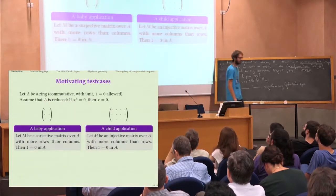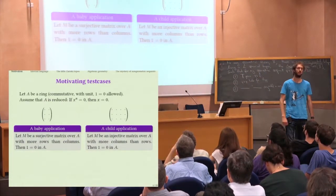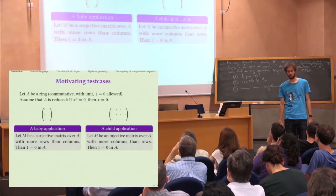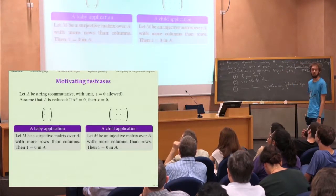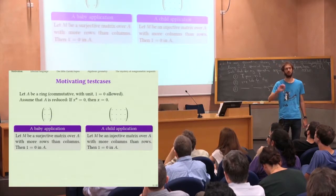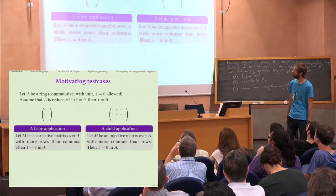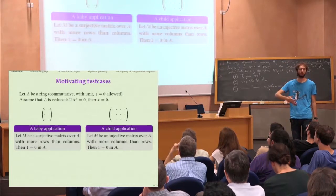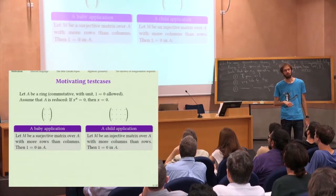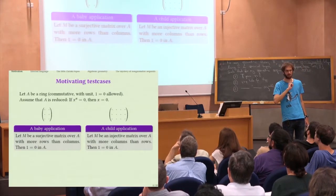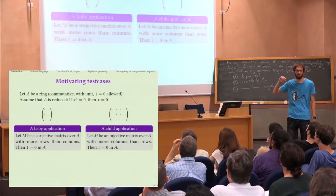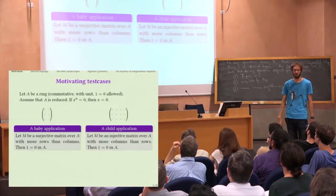We'll start with three motivating test cases from commutative algebra: a baby example, a child example, and an example named after Grothendieck. The baby application is the following: let M be a matrix over a commutative ring and assume that the induced linear map is surjective. Further assume that the matrix has more rows than columns. Then the claim is that one equals zero. If A was a field this wouldn't be a surprise at all — you learned this on your first day in university. It's a basic statement from linear algebra, but this is for general rings.